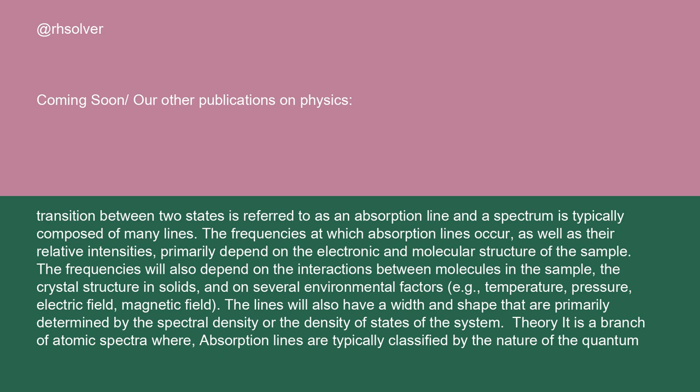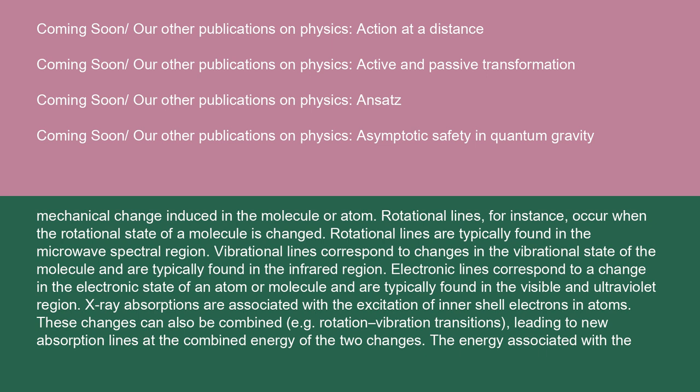In atomic spectra, absorption lines are typically classified by the nature of the quantum mechanical change induced in the molecule or atom. Rotational lines occur when the rotational state of a molecule is changed and are typically found in the microwave spectral region. Vibrational lines correspond to changes in the vibrational state of the molecule and are typically found in the infrared region. Electronic lines correspond to a change in the electronic state of an atom or molecule and are typically found in the visible and ultraviolet region. X-ray absorptions are associated with the excitation of inner shell electrons and atoms. These changes can also be combined, e.g., rotation-vibration transitions, leading to new absorption lines at the combined energy of the two changes.